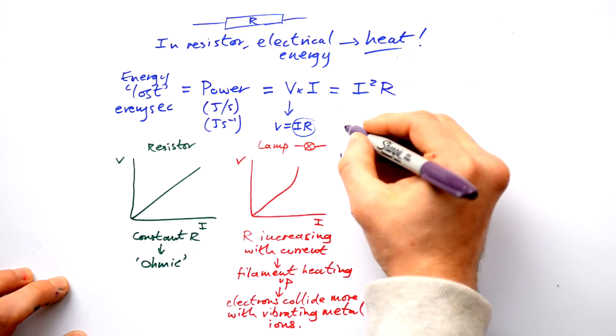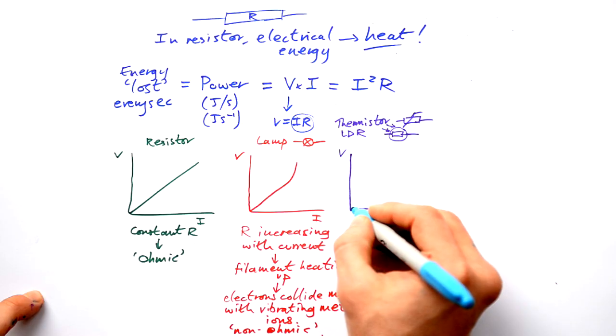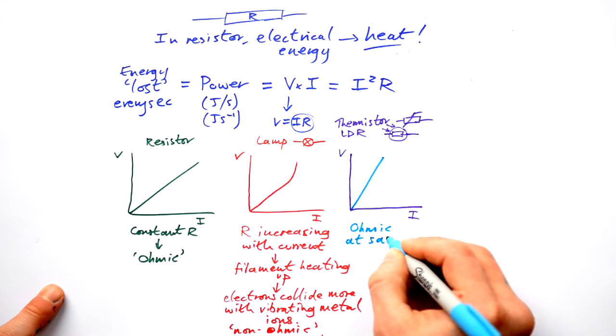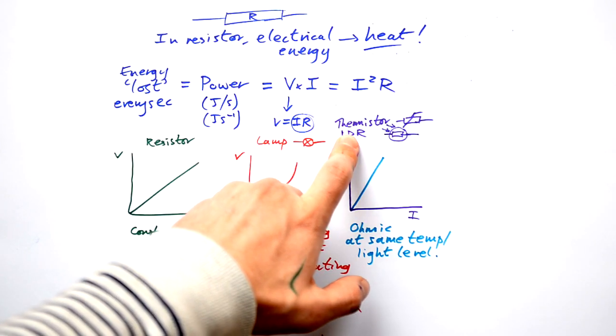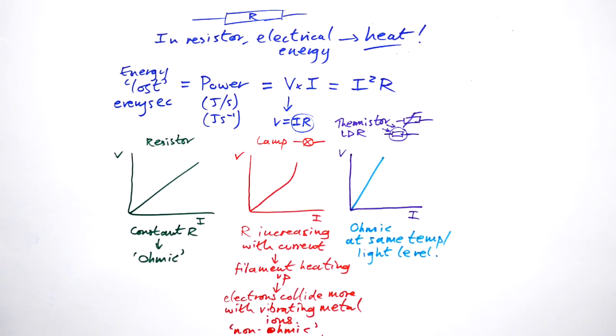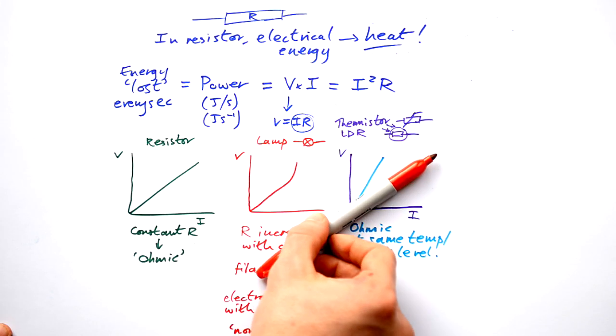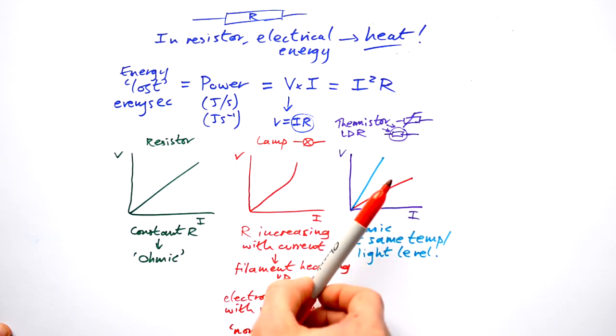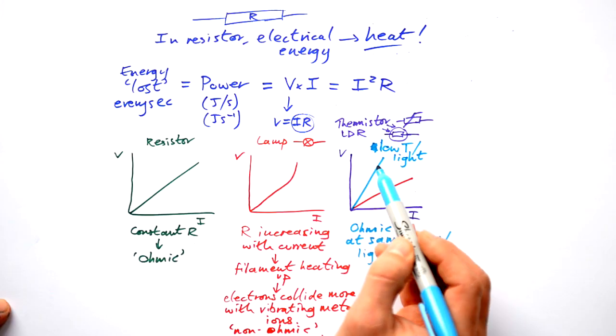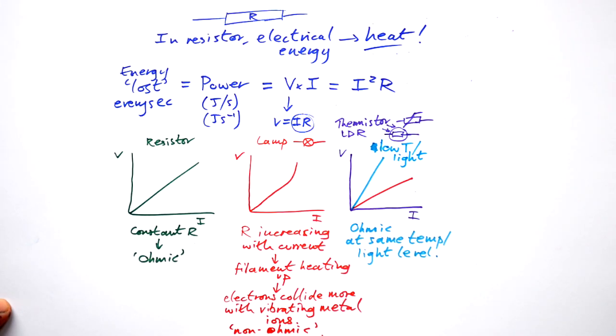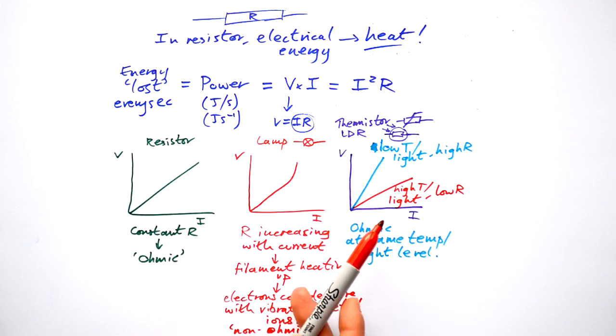What else do we have? We have thermistors. We draw that like this. And LDR, that's a light dependent resistor. Now with LDRs and thermistors, they will actually be ohmic at the same temperature or light level respectively. So if a thermistor is at the same temperature, then it will be ohmic. If an LDR has the same amount of light falling on it, then it will be ohmic. However, that does change with temperature and light level. If you expose a thermistor to a higher temperature, this graph actually goes down. What's happened? Its resistance has decreased. It's the same thing with an LDR. If you give it more light, its resistance decreases as well. So when we have a low temperature or low light, a thermistor or an LDR's resistance will be high. But when we have a high temp or high light, there's a low resistance. This is going to be really important later on when it comes to potential dividers.